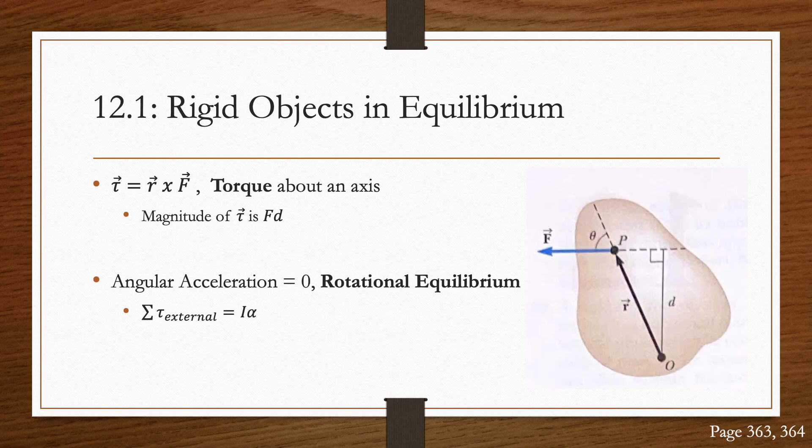From Chapter 10, the magnitude of torque is F times D, where D is the moment arm. With that, we know that the net torque on a rigid object causes it to experience an angular acceleration.